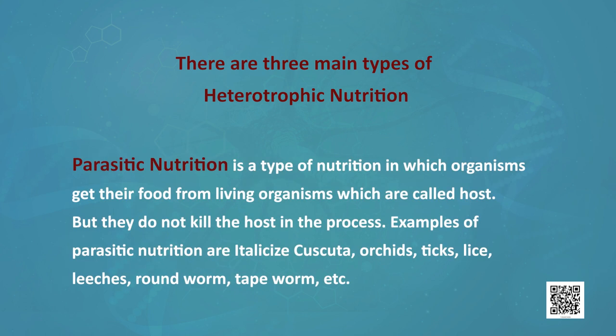Parasitic nutrition is the type of nutrition in which organisms get their food from living organisms called hosts, but they do not kill the host in the process. Examples of parasitic nutrition are cuscuta, orchids, ticks, lice, leeches, roundworms, tapeworms, etc.